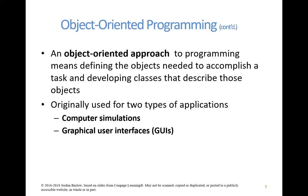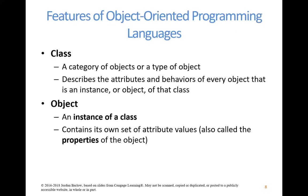The object-oriented approach means that we define objects needed to accomplish a certain task and develop classes that describe those objects. A class in programming is a category or type of object — it describes the attributes and behaviors of every object that is an instance of that class. A file that contains the set of programming instructions we often refer to as a class. An object is an instance of a class, which contains its own set of attribute values.